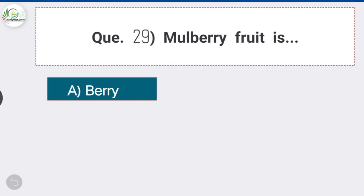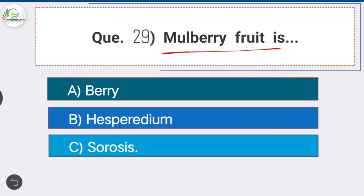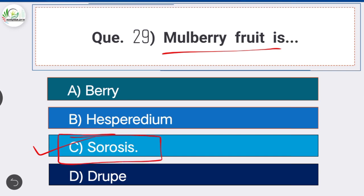Question twenty-nine: mulberry fruit is — option C is the correct answer — sorosis. A fleshy multiple fruit derived from the ovaries of several flowers, mulberry is a composite fruit called sorosis.